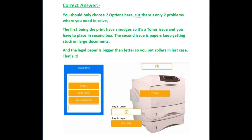The second issue is that paper keeps getting stuck on large documents. The legal paper is bigger than the letter size, so you would put rollers in the last slot. As you can see in the picture, the roller goes in the last case.